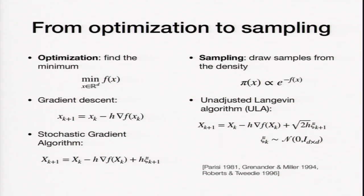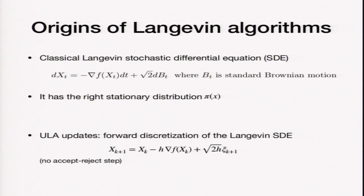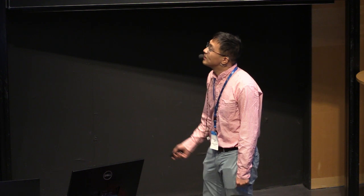The noise scale in sampling algorithms is actually larger than that needed for stochastic gradient descent algorithms — intuitively, you need more noise to explore the whole space. This algorithm comes from the classical Langevin stochastic differential equation: dX_t = minus gradient f(X_t) dt + square root of 2 dB_t, where B_t is the usual Brownian motion. Under some regularity conditions, this continuous process has the right stationary distribution, converging to e to the minus f. ULA is just a forward Euler discretization of this SDE.